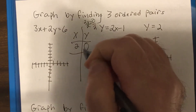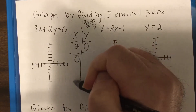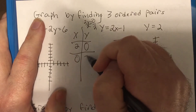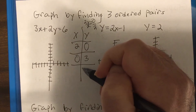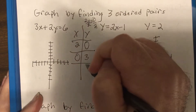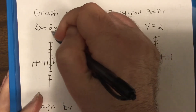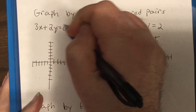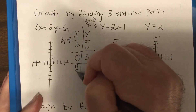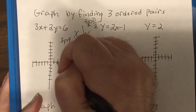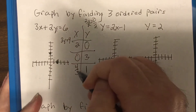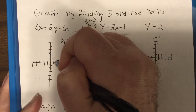Let's put zero in for x — three times zero is zero, that's two y, so divide by two, y would be three. Let's put in one for y — two times one is two, subtract two, you'd have three x equals four, so x equals four-thirds. So you'd have (2, 0), (0, 3), and (4/3, 1). Four-thirds is one and a little bit more.